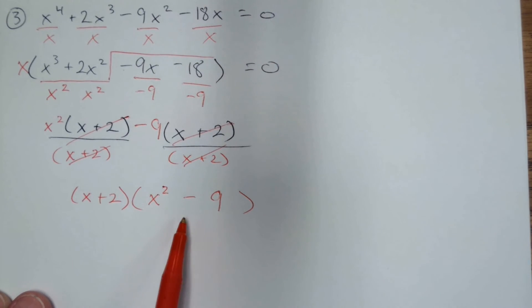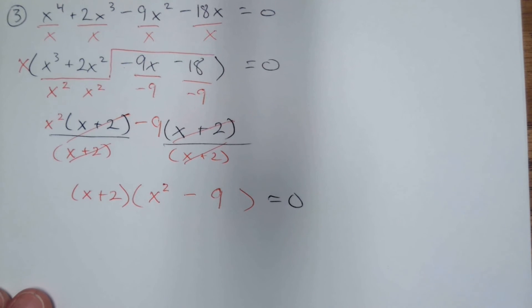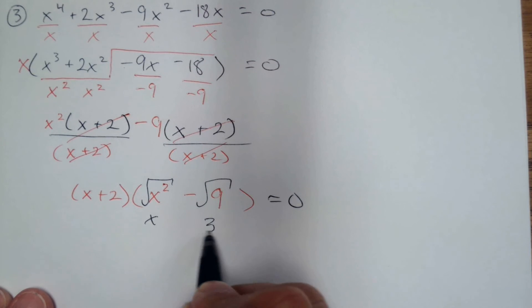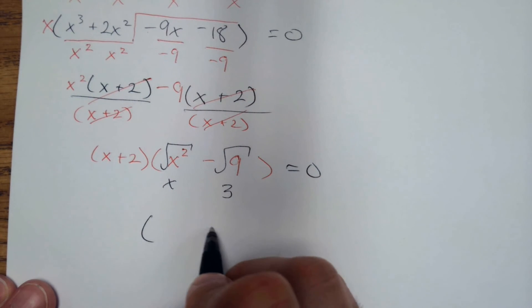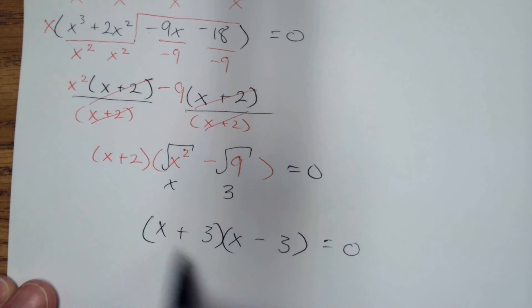But this is a difference of squares. So that's what makes it a little bit more involved. We can square root both of these. I get x and 3. And then we use our difference of squares pattern, where you have two parentheses, one has a plus, one has a minus. x, 3, x, 3, still equals 0.